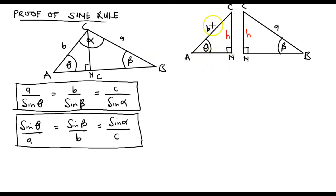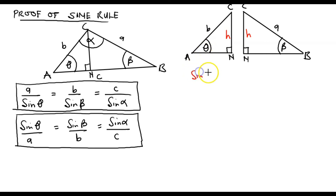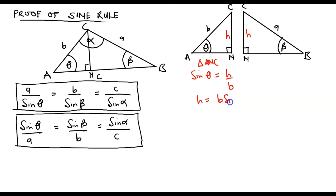H is the side facing the angle theta in triangle ANC. So we can connect the side H and B with the angle theta. The trig ratio to connect these is the sine ratio. From triangle ANC, we have: sine of theta equal to the opposite side H over B. Making H the subject: H equals B times sine of theta. We can label this equation 1.